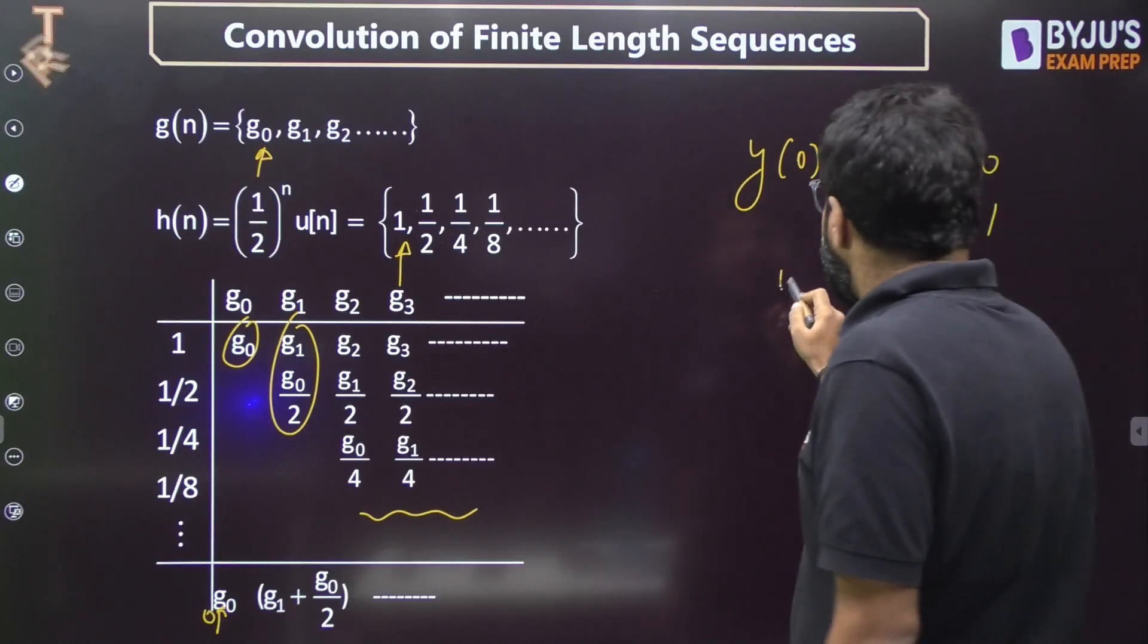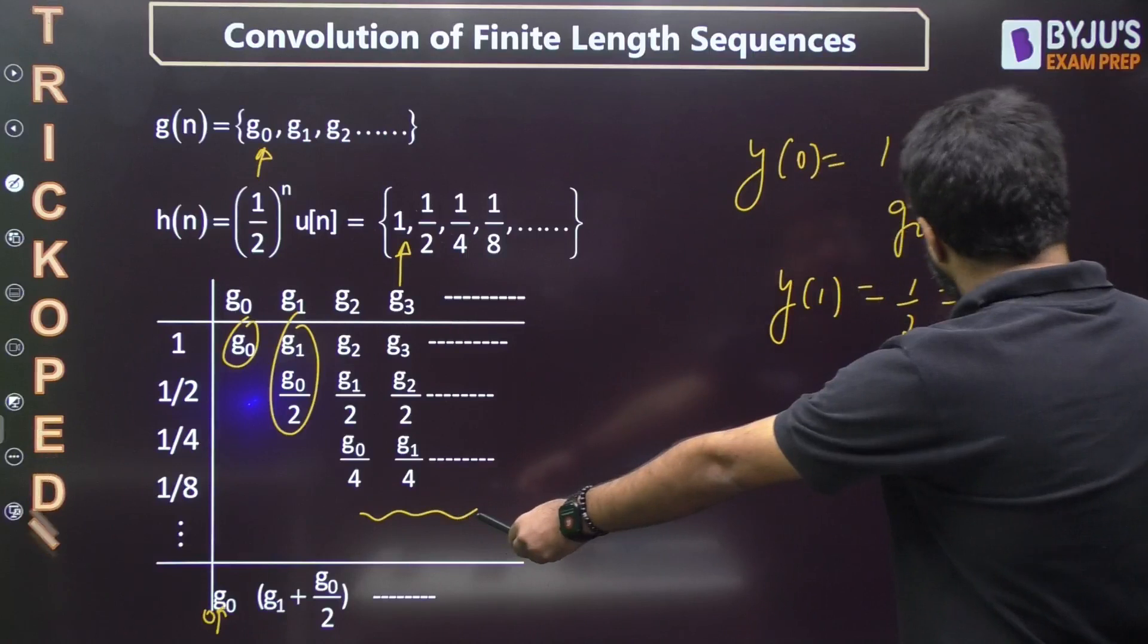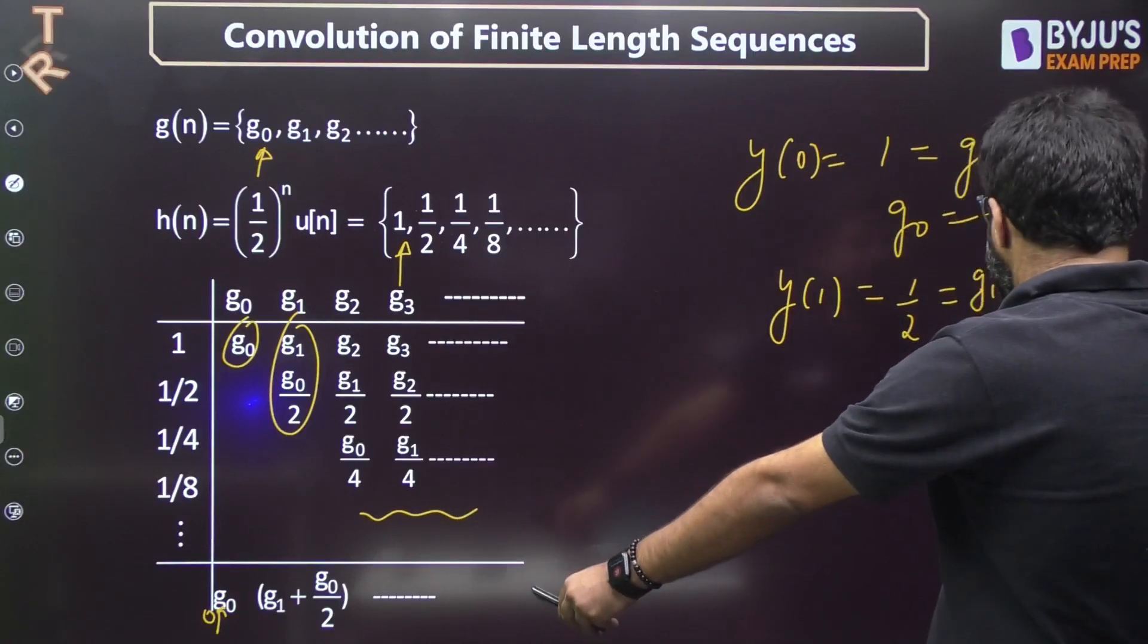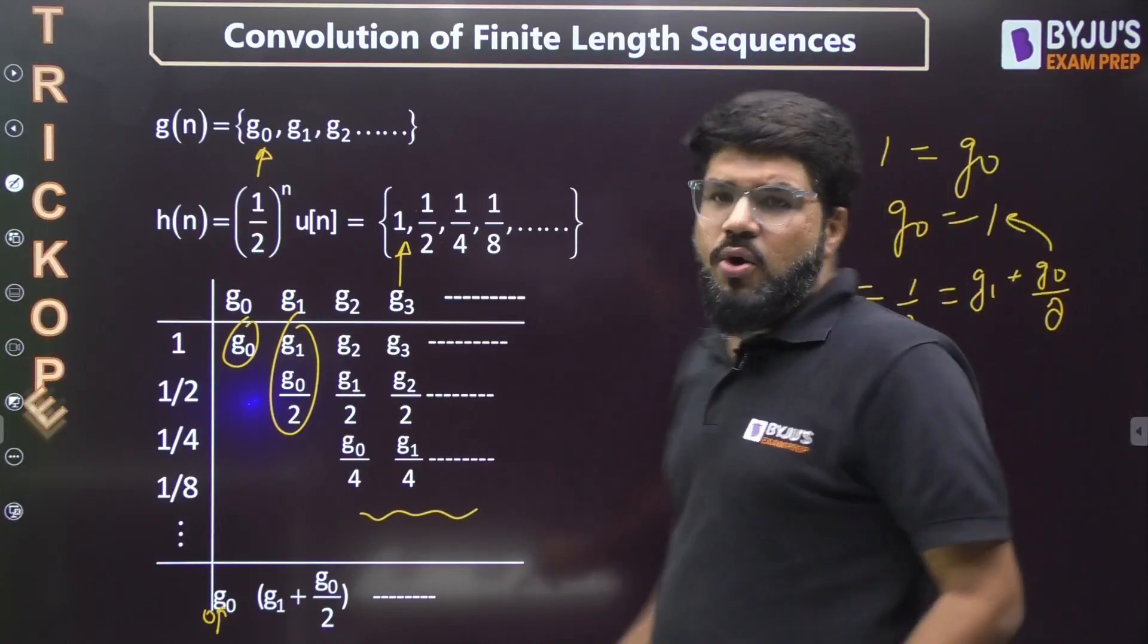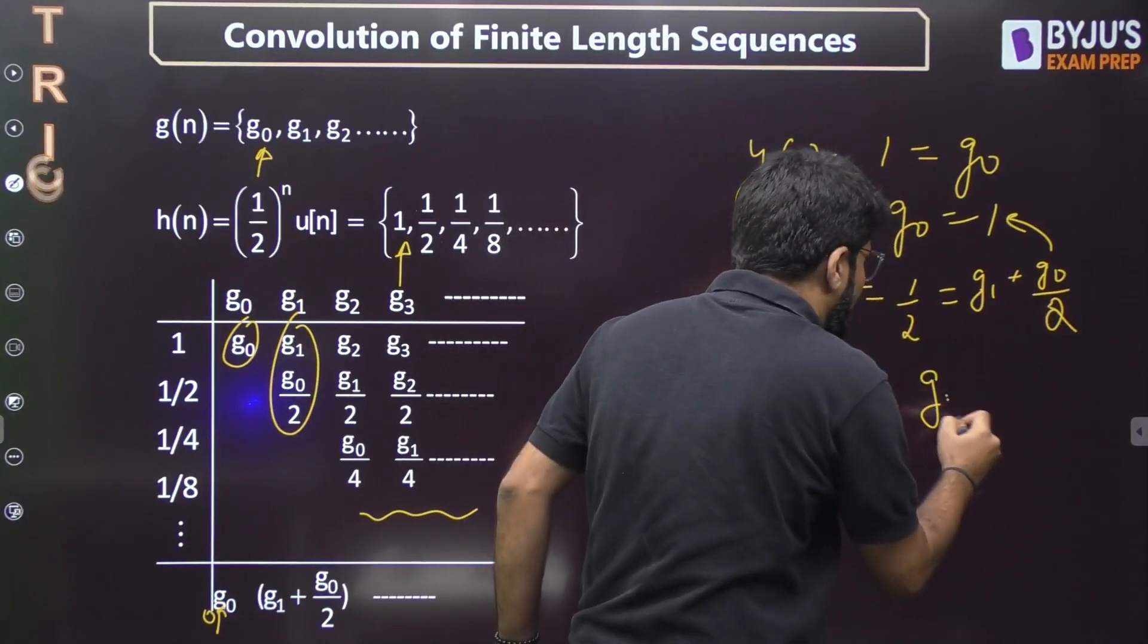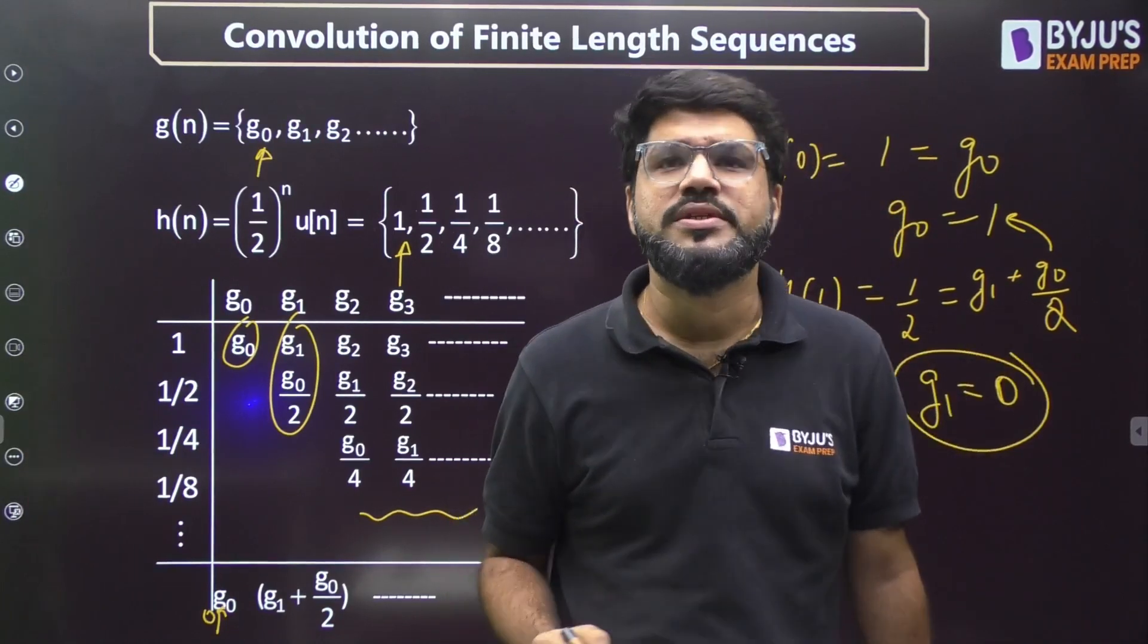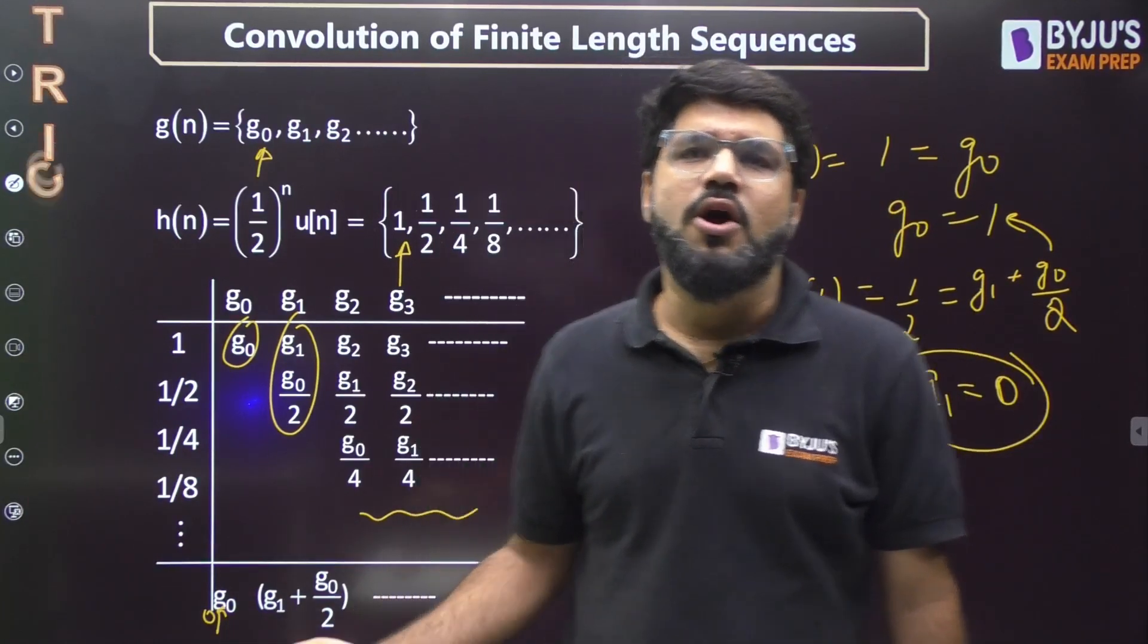Next value: y[1] is given to you as 1/2. But what is y[1] here? That is g[1] plus g[0]/2. But g[0] is 1, so this is 1/2, this is also 1/2, that will be cancelled. After cancellation, nothing is left. g[1] is equal to 0. Option number A is the correct answer. Very simple.